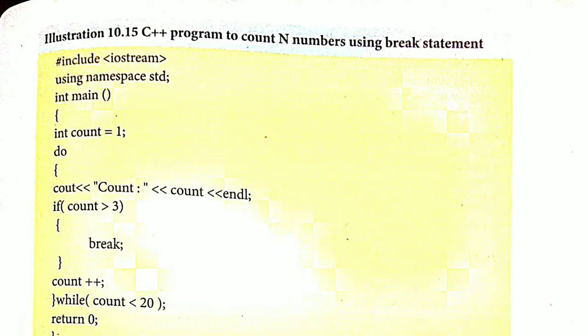In this example they use the break statement to count given n numbers. In main, an integer variable count is initialized to one and a do-while loop is used. Inside the loop, count is printed, and if count is greater than or equal to three, the break statement is executed, stopping the loop.